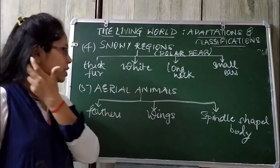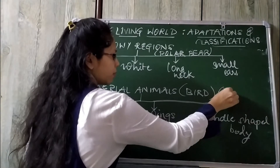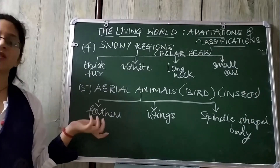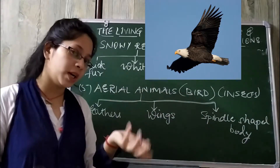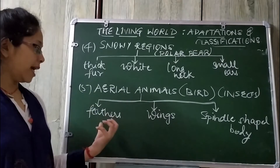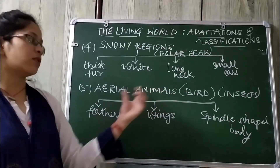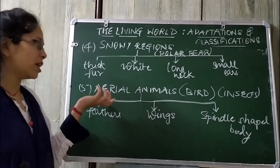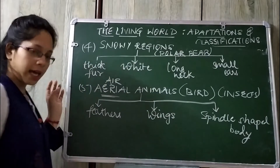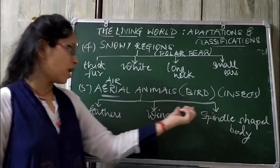Next are aerial animals. We take the example of any bird or insects. Birds have feathers because their mode of movement is flying — they need feathers to move. Next, they have wings. Wings are present in insects; insects do not have feathers, but they have wings. Aerial means animals which live in air. So birds have feathers, but insects have wings.